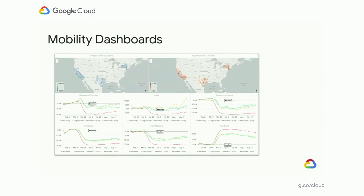More recently, we've decided to publish another block into the marketplace focused on the mobility data published by Google. This data talks about patterns and mobility across the United States. With both of these blocks installed on your Looker instance, you can see this data side by side and get a clear view of how mobility patterns have been correlated with different infection spread across the country.